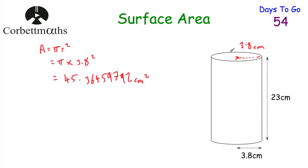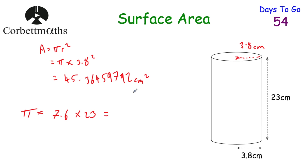So we need to find the circumference of the circle and multiply it by the height of the cylinder, and that gives us the curved surface area. We do pi times the diameter — the diameter is 7.6 centimetres because the radius is 3.8. So pi multiplied by 7.6 gives us the circumference, and then we multiply that by 23, the height of the cylinder. That gives us 874 over 5 pi, or 549.1503958 centimetres squared.